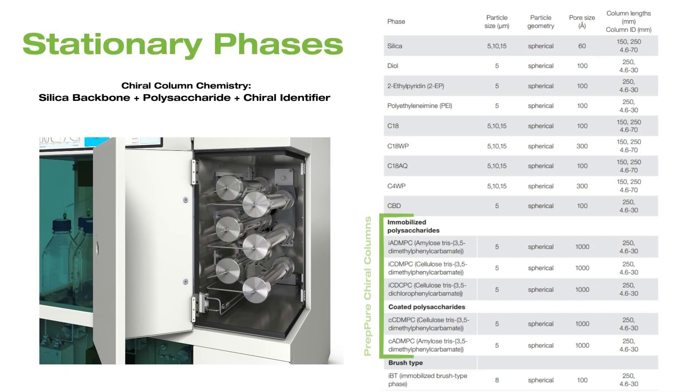Chiral columns are super interesting. There's a lot more chemistry going on in the chiral column media than, say, your typical bare silica or even your functionalized silica with C18. In your chiral columns, you still have your silica backbone, but then that is either coated or bonded with a polysaccharide — either amylose or cellulose. And then on that polysaccharide is actually a chiral identifier attached to it. The chiral identifier provides a three-point interaction to help separate those different enantiomers based on their structure, not necessarily their weight or their polarity.